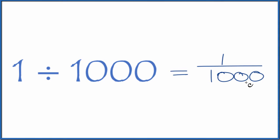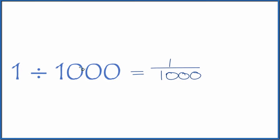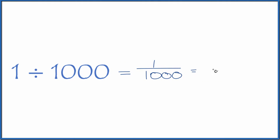We could also divide this on our calculator. 1 divided by 1,000 equals the decimal 0.001. So when we divide 1 by 1,000, we can have the fraction 1 over 1,000 or the decimal 0.001.